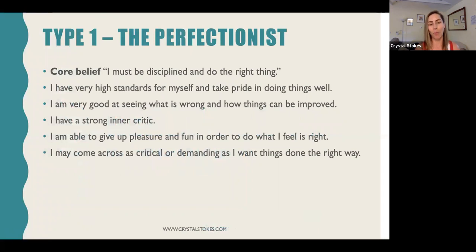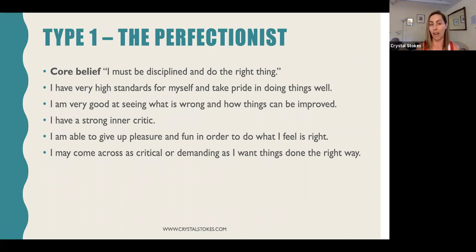Starting with type one, which we call the perfectionist. Each type has a core belief — the most important aspect when working with any particular person. If you're trying to discover their type, or they already know it, focusing on this core belief can be really helpful because it's often the number one thing that keeps clients stuck. The core belief for type one is: I must be disciplined and do things the right way. You can imagine the fixation on doing it the right way — what is their definition of right and wrong?